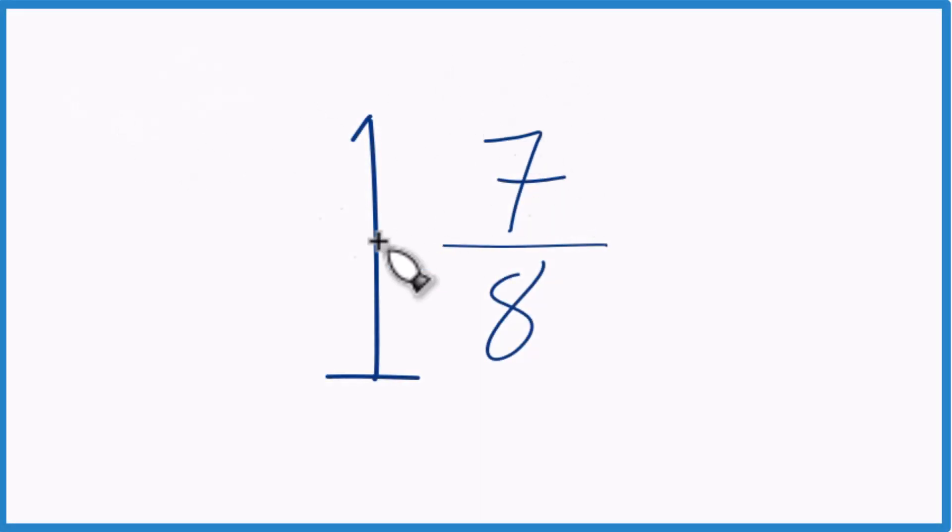If you're given the mixed number 1 and 7 eighths, how do you get that to be an improper fraction? Here's how you do it.